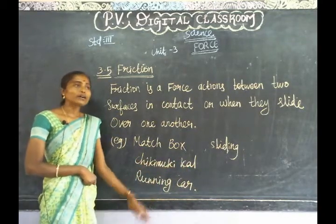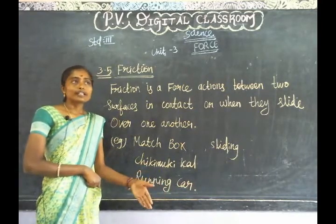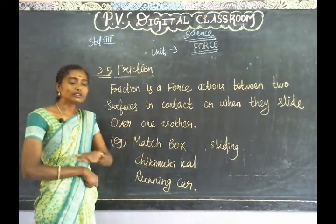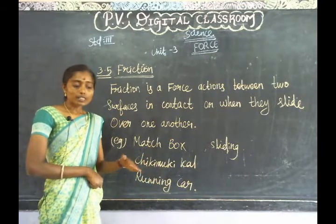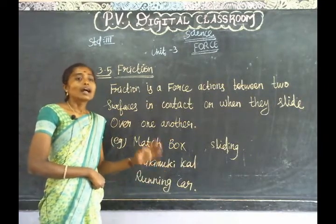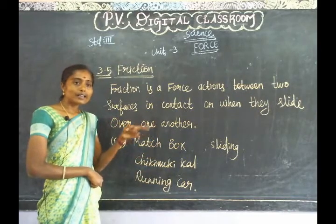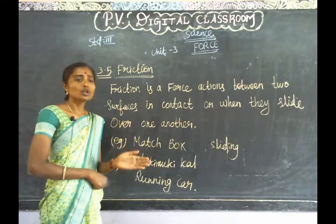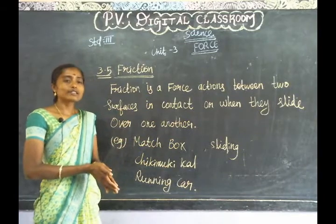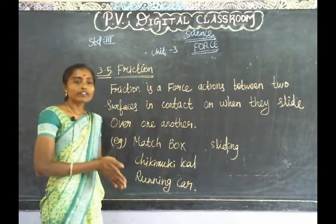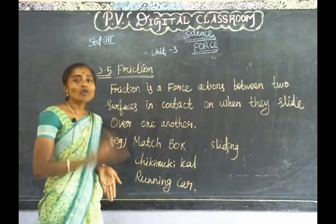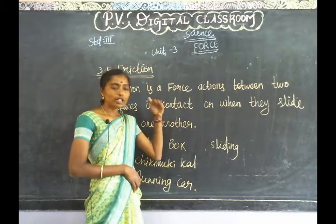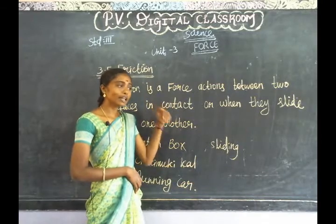Next example is a running car. When a car moves on a road, the road is the surface and the car tires are the object. The tires and the road surface are in contact, and the friction force between them allows the car to move.